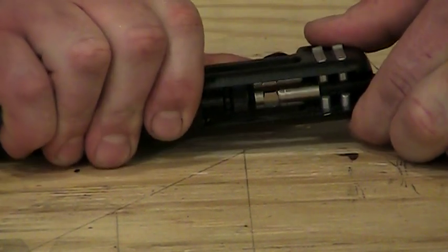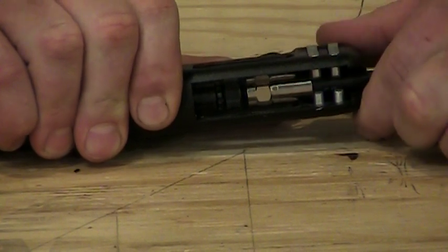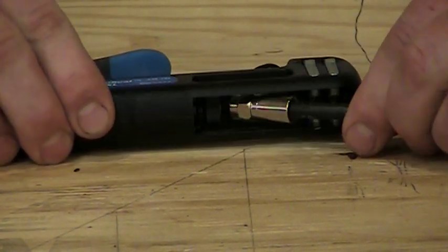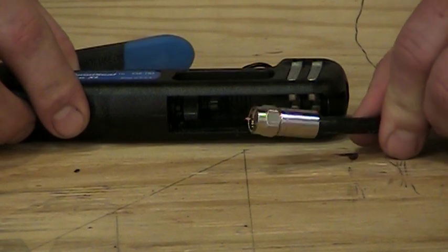And we simply just squeeze the handles down and it compressed the connector like we talked about. And when we release the tool, we can now remove the connector and there is a properly compressed F connector.